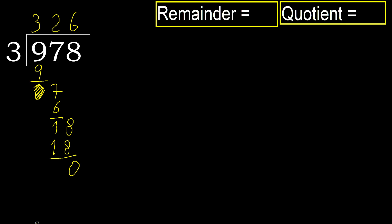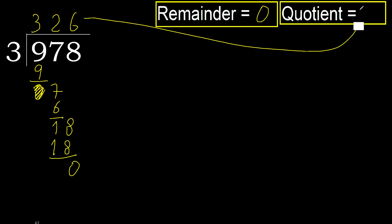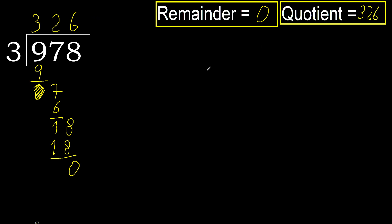That is not a number, therefore finish it. Therefore, 978 divided by 3 is 326.